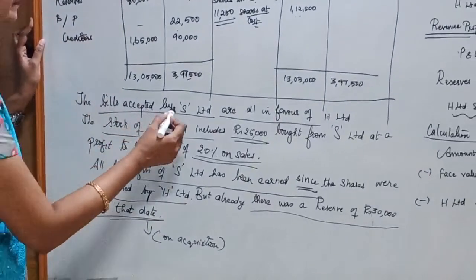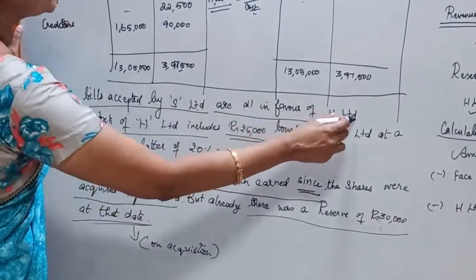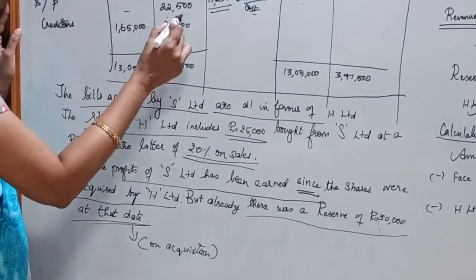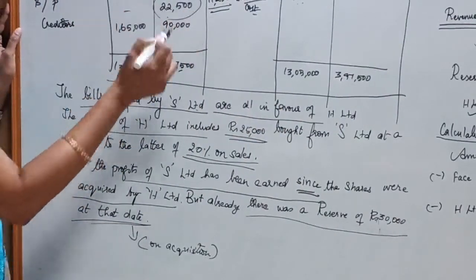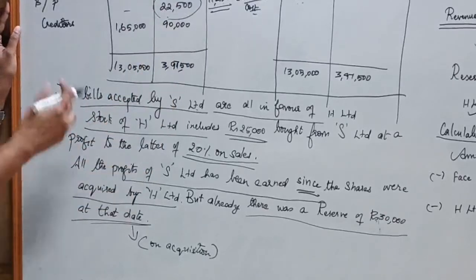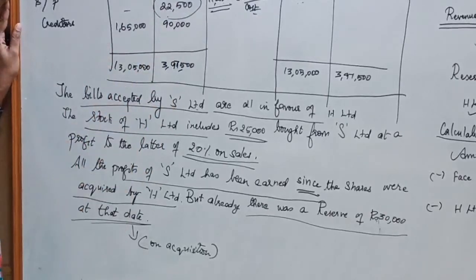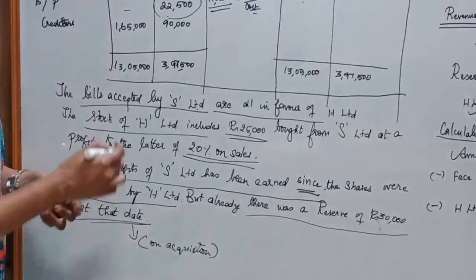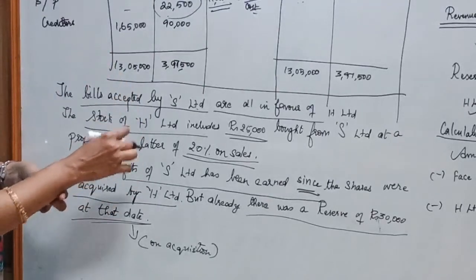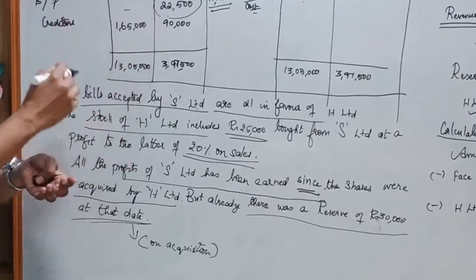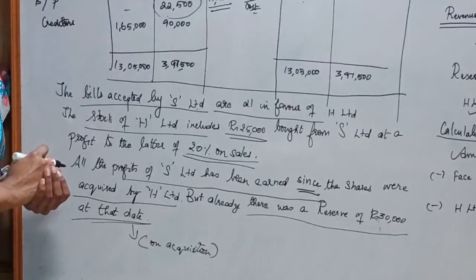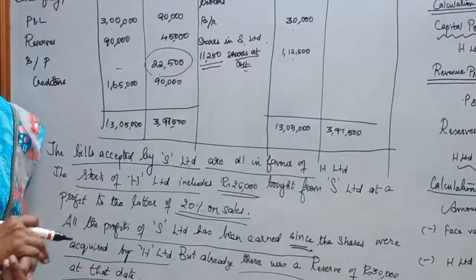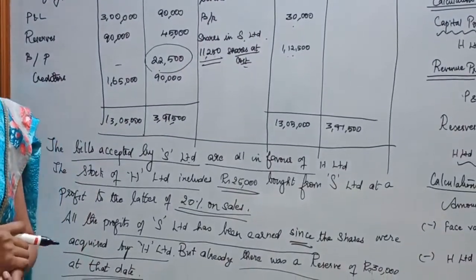The bills accepted by S Limited are all in favor of H Limited. Coming to the liability side, bills payable of S Limited is Rs.22,500 and they are all accepted in favor of H Limited. So these are inter-company transactions. This Rs.22,500 must be deducted from bills payable on the liability side and from bills receivable on the asset side of the consolidated balance sheet.